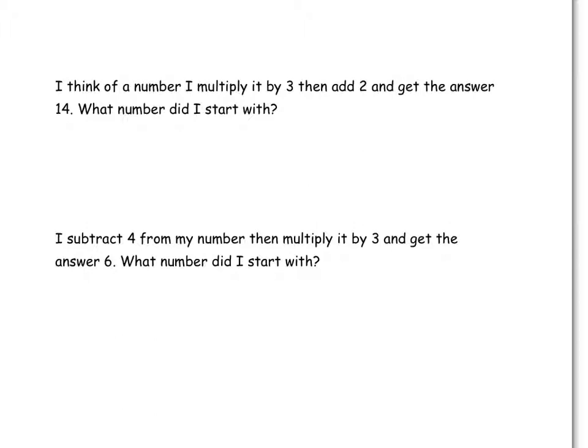Yet again, we're not told what to use for our number. So let's pick a t. And it says, firstly, that number is multiplied by 3. Then, we add on 2, and this gives us the answer 14. Well, the answer 14 means that what we've got here, our expression, must be equal to 14.